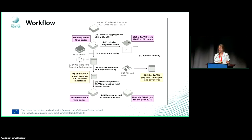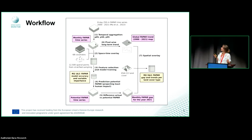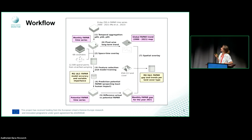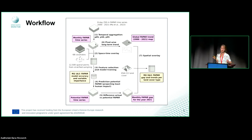Here is the overall workflow we used. We started with time series data of FAPAR from MA et al., which has an 8-day, 250-meter spatial resolution time series from 2000 to 2021. We aggregated this data to monthly composites using different percentiles, then did an overlay with 12,500 spatially distributed training points and a set of covariate layers. From that, using regression metrics, we then trained a machine learning model to predict actual FAPAR, with some feature selection.